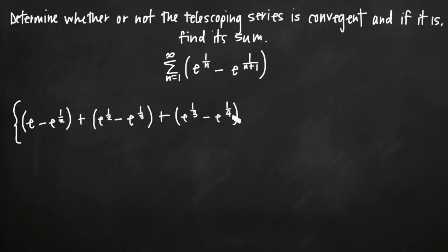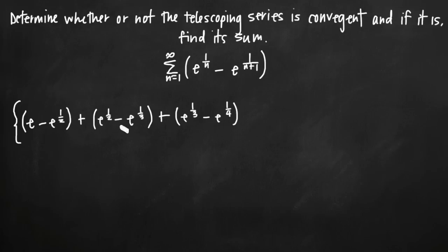It should become obvious fairly quickly that this is a telescoping series, because the second value in each term is always going to be the negative version of the first value in the next term. Here we have negative e to the 1 half and positive e to the 1 half — if we added these together, they would cancel, netting to zero. Similarly, negative e to the 1 third and positive e to the 1 third cancel as well.